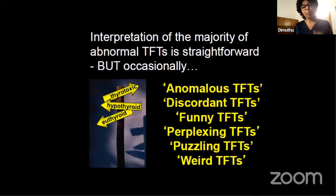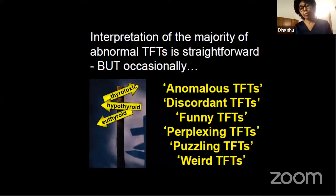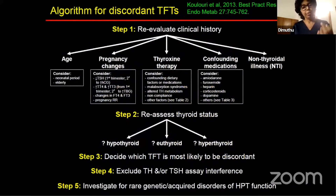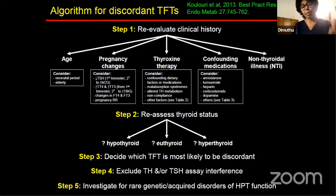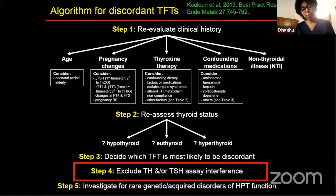Interpretation of the majority of TFTs is straightforward, but occasionally we encounter these abnormal or anomalous TFTs — different terminology is used for this. This is a very practical algorithm published in 2013 on how to proceed with discordant TFTs. The first step would be to exclude different confounding factors, and then consider interference before proceeding to various sophisticated diagnoses — genetic or acquired disorders of the HPT axis.